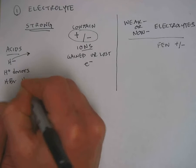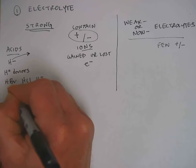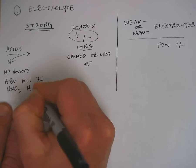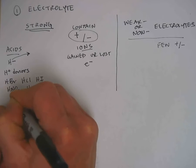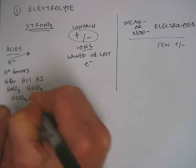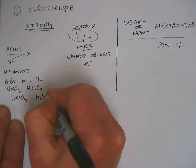The strong acids to know are HBr, HCl, HI, HNO3, HClO3, HClO4, and H2SO4.